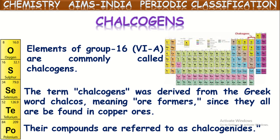The meaning of the word Chalcogens is derived from 'ore formers,' because most of the metallic ores are available in the form of either oxides, sulfides or selenides in the earth's crust. Based upon this reason, these 6A group elements are named as Chalcogens.